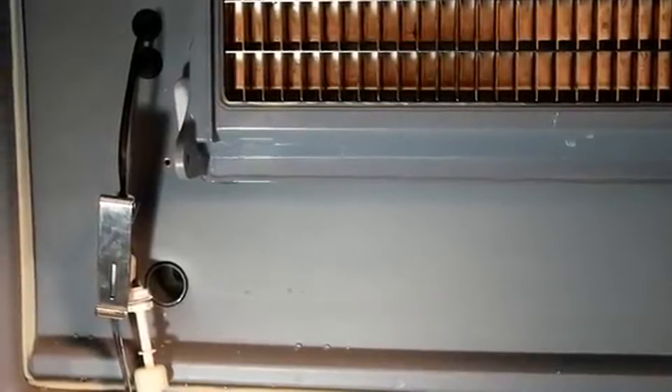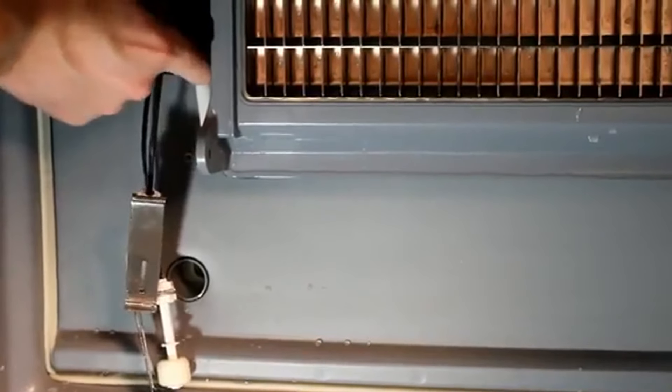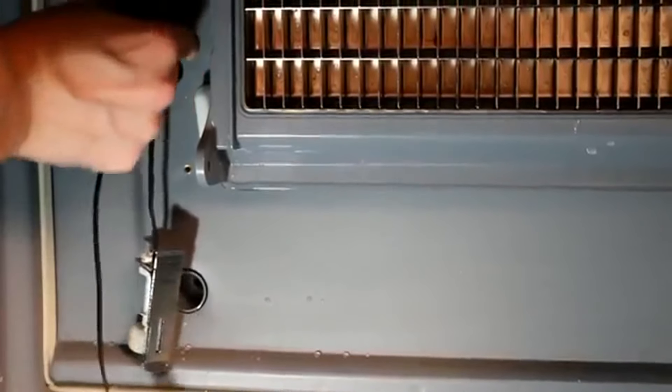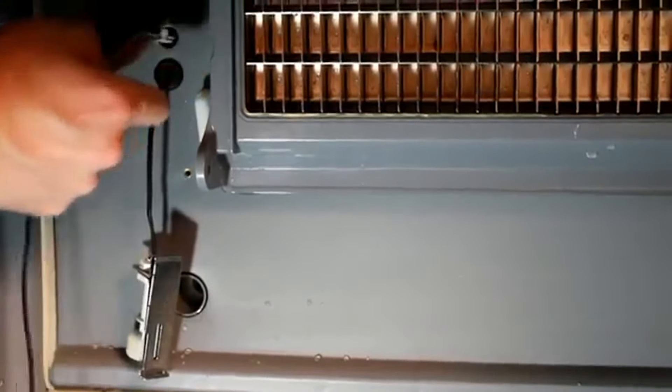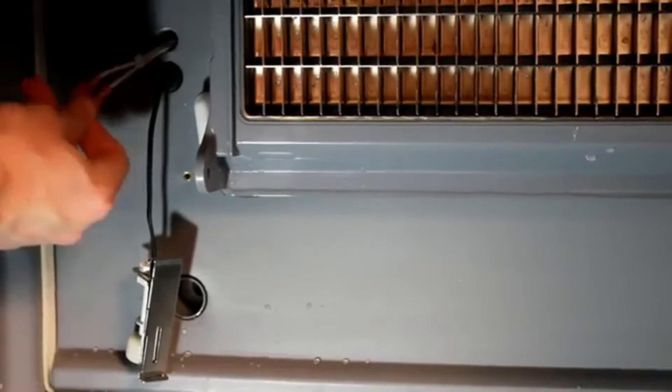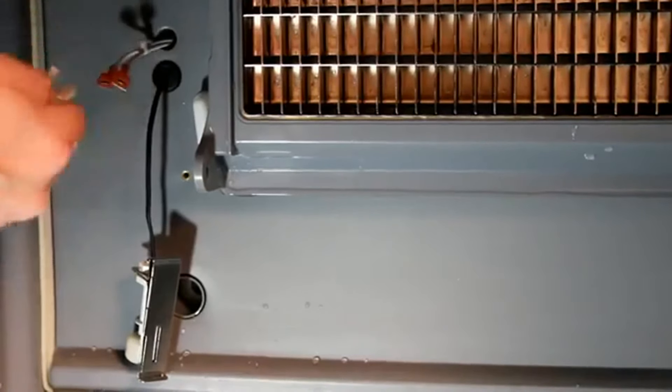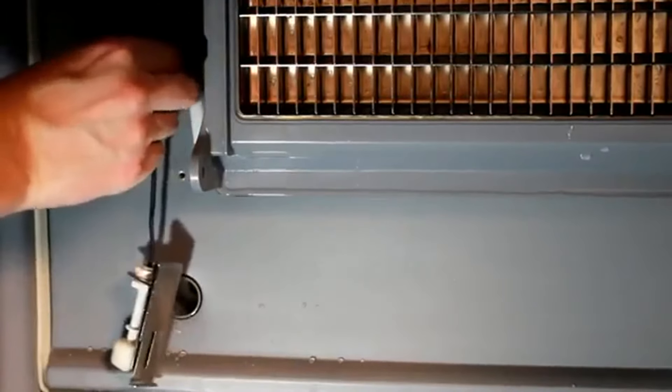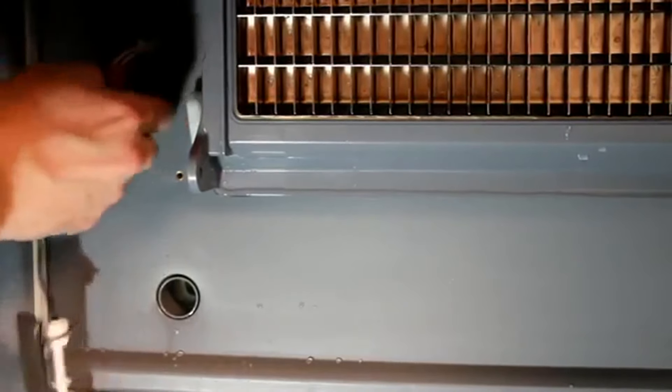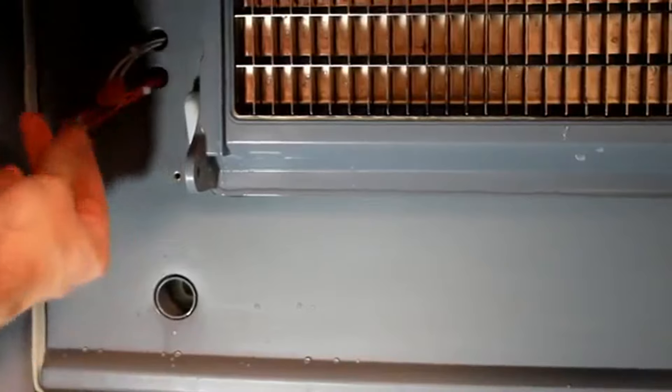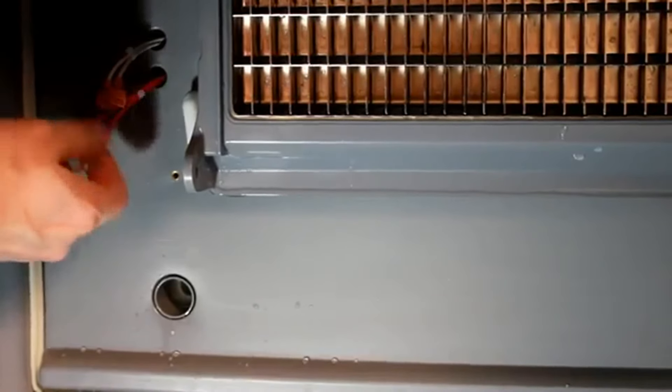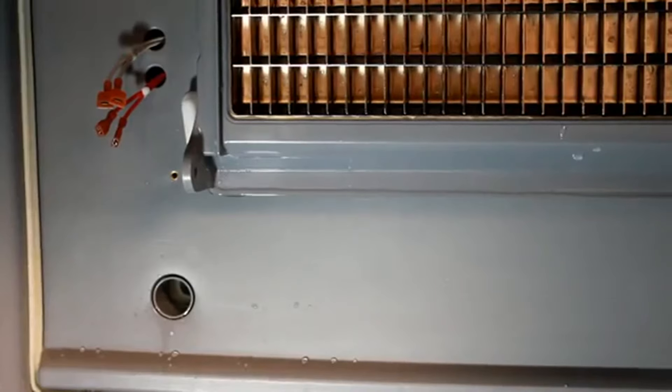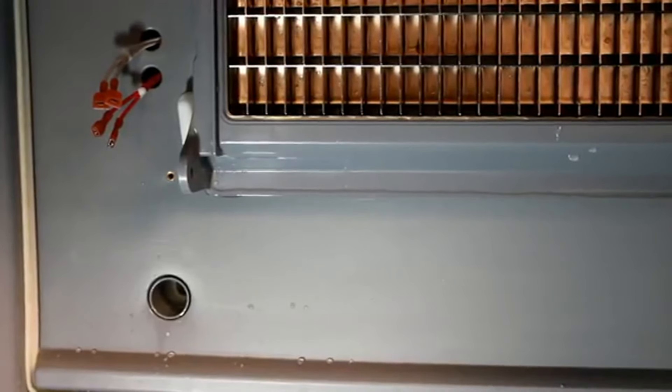Finally, remove the two floats by pulling out the grommets, pulling the leads through, and disconnecting the power leads. Now we can take these parts over to a wash bin for cleaning.